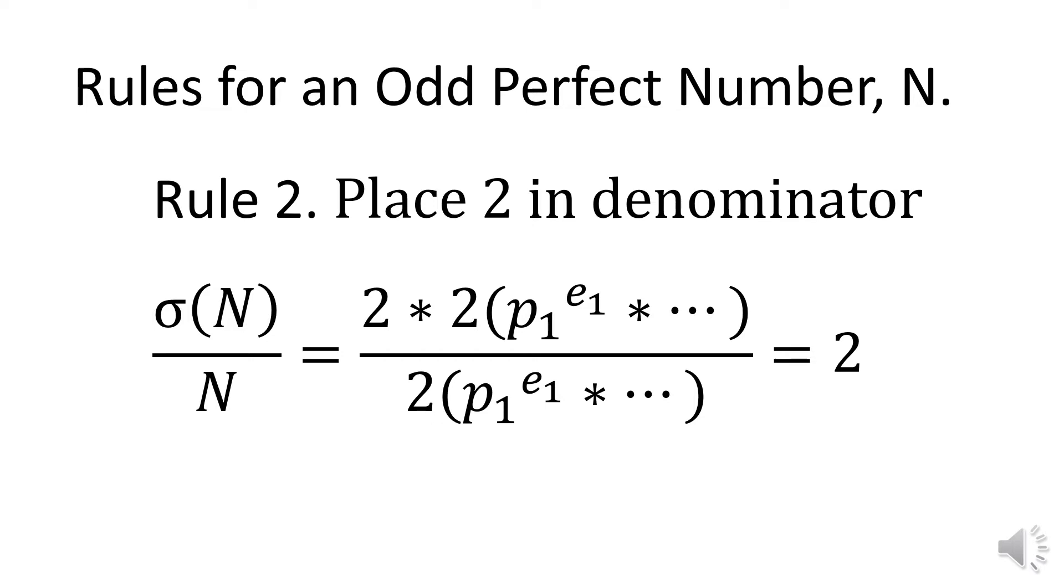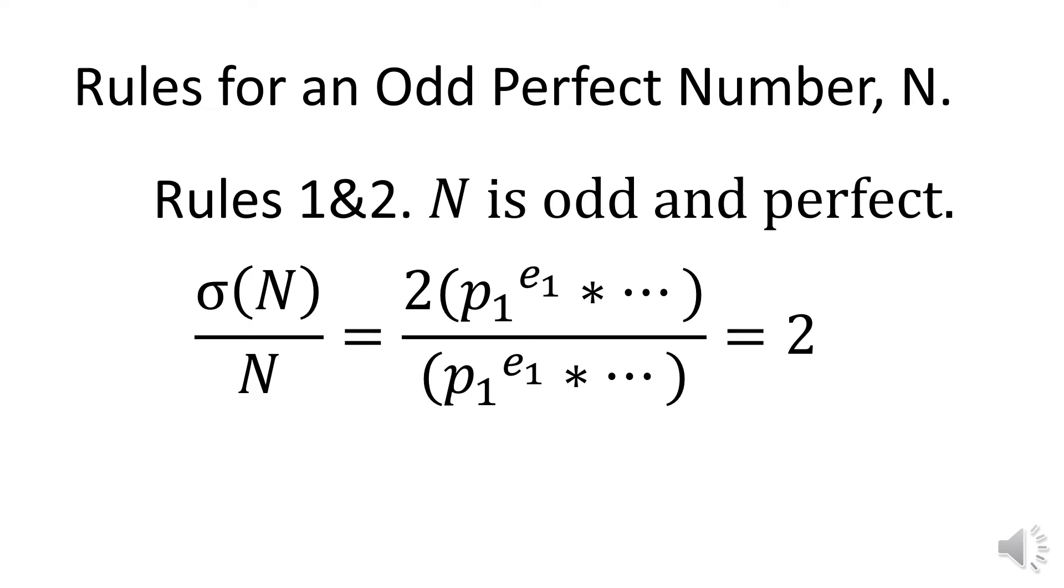Place two in the denominator to cancel the surplus two in the numerator. The twos cancel, leaving the quotient two. Then N is a perfect number, but N is in the denominator where two is a factor. That means N is an even perfect number, not odd. Now place a single two in the numerator as a factor of the sum of divisors of N. The odd number in the denominator cancels the odd primes in the numerator, leaving a quotient of two, and N in the denominator is odd. Therefore, two divides sigma N exactly once.